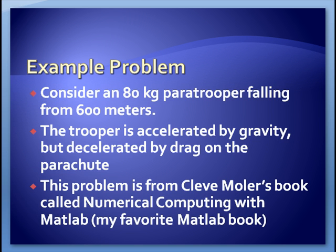So our example problem for this is a falling paratrooper. It's an 80-kilogram paratrooper falling from a height of 600 meters. There's acceleration of gravity, and then there's drag on a parachute, and we're looking for essentially the terminal velocity, the velocity at which the gravity and the drag forces match each other, and there's no further acceleration. This came out of Moeller's book on numerical computing with MATLAB, which I think is an excellent book.